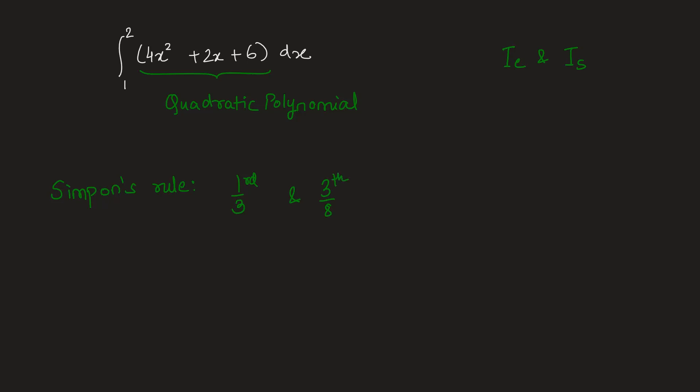For 1/3 Simpson's rule, we know that it exactly evaluates the value for a quadratic polynomial because it is based on quadratic interpolation.